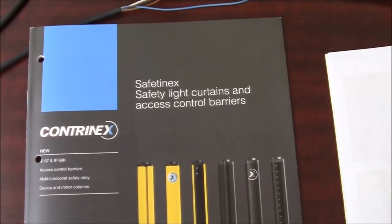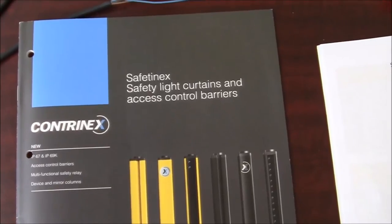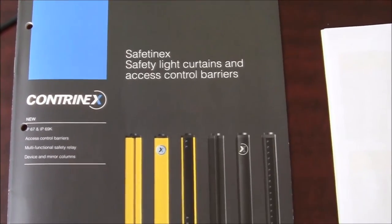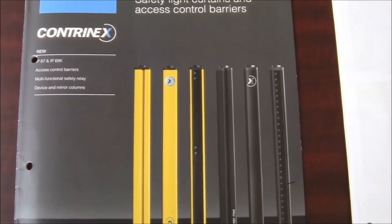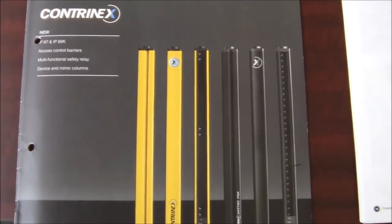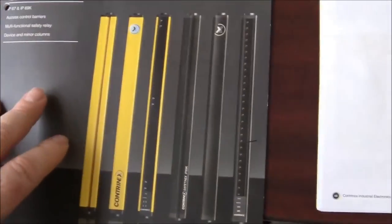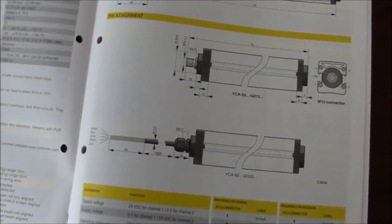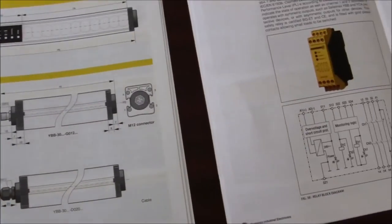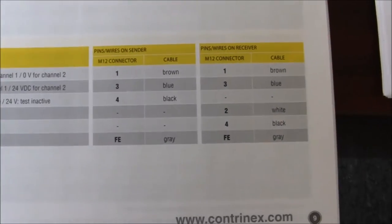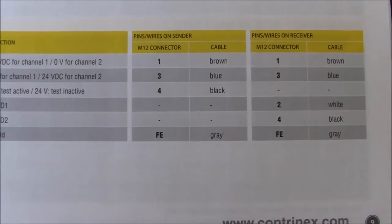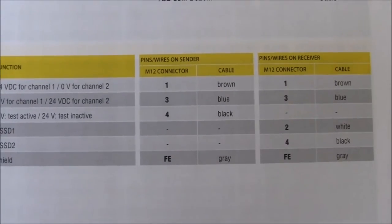This is the safety light curtain and access control barrier manual that I can send to you via the internet should you require any additional assistance. On page 9 you will find this table at the bottom and it's going to tell you exactly what your wire colors are for your cables.